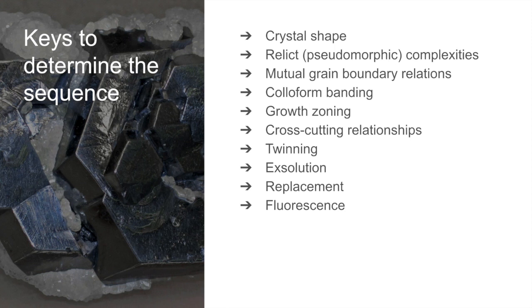Typical examples are cassiterite, scheelite and some of the common gang minerals, for example, certain calcites, dolomites and fluorites. Fluorescence may also reveal growth zones and other banded features within the mineral that are not normally visible. Well, these are some of the keys you can use to erect the paragenetic sequence of a given deposit.